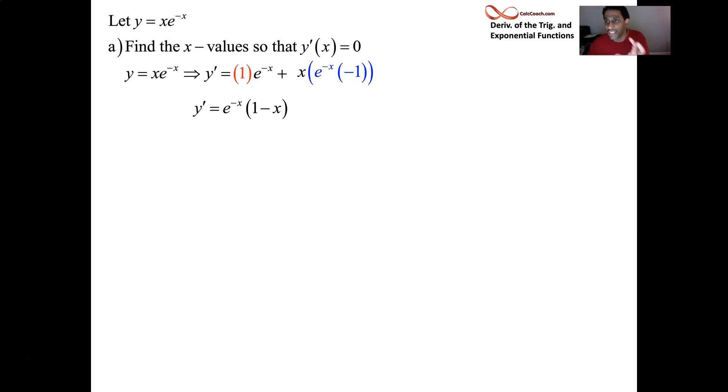What we can do to make it simpler is to factor out what they have in common. Both of these have e to the negative x in common, so we factor that out. The first term is left with a one and the second term is left with a negative x. So when we go to set this equal to zero, we have these two factors now, the product of two factors being equal to zero. One of them has to be zero. But really think about what e to the negative x does. The graph of it, it'll never be equal to zero. It asymptotically approaches zero but it'll never be equal. So if this derivative is supposed to be equal to zero, it's got to happen at x equals one. That's the x value that makes the derivative zero.